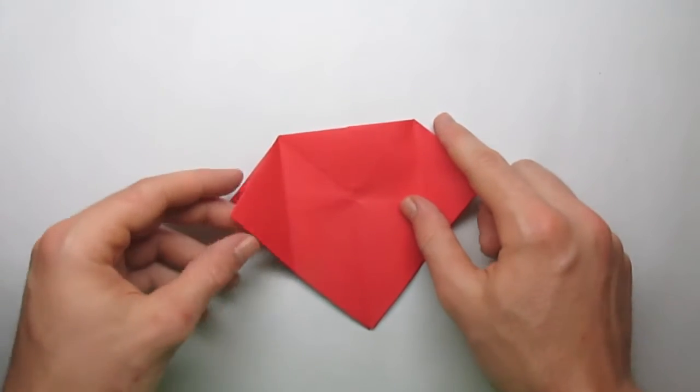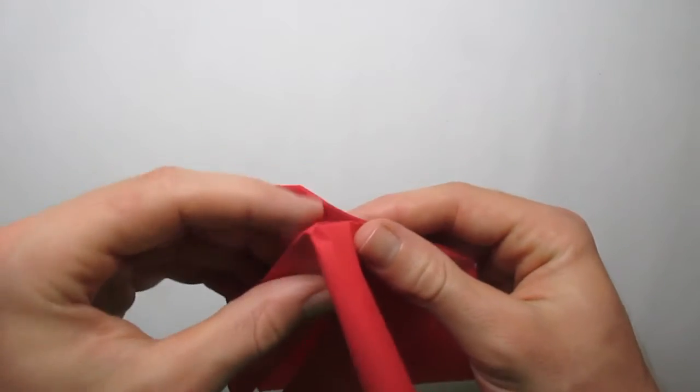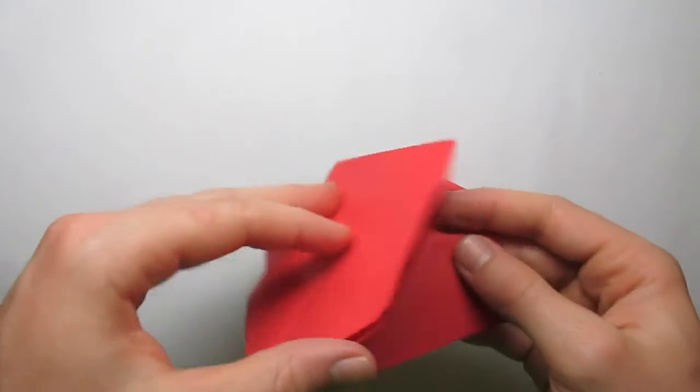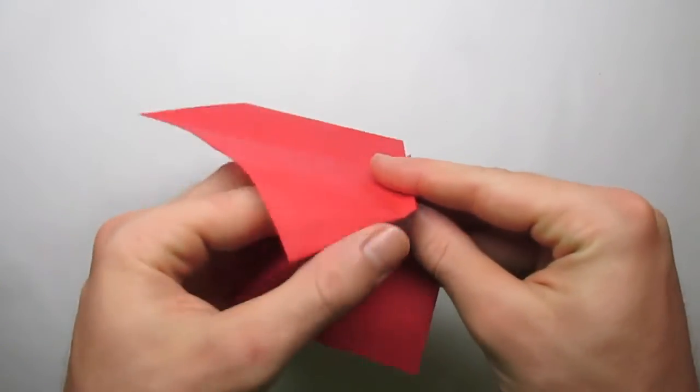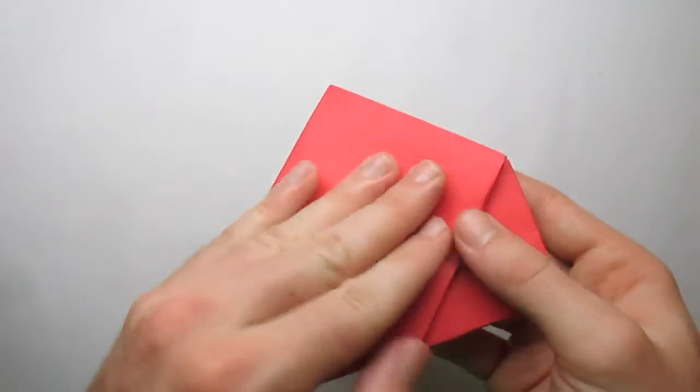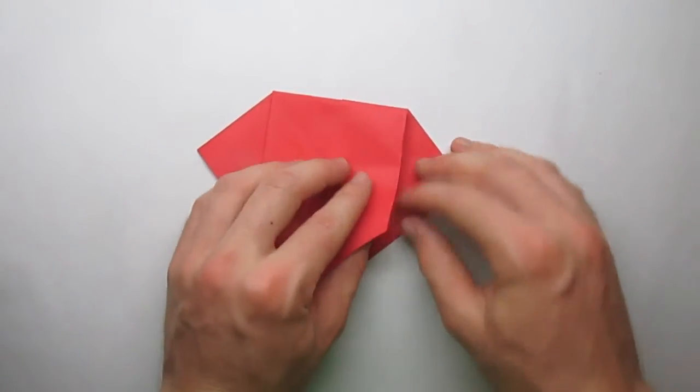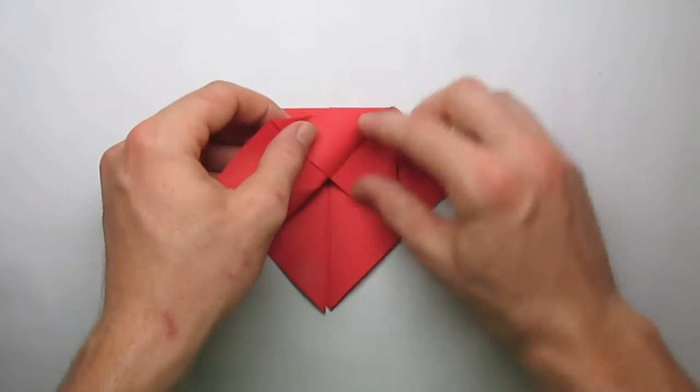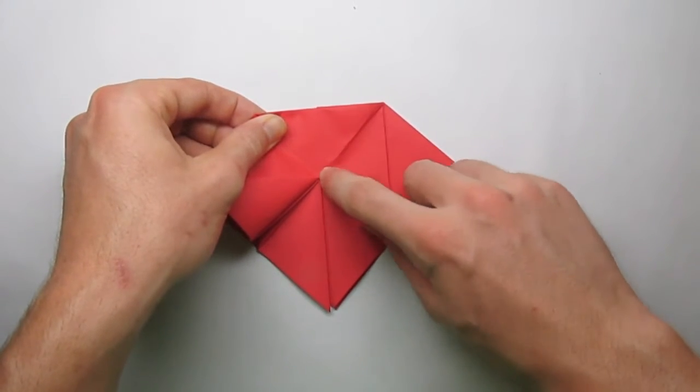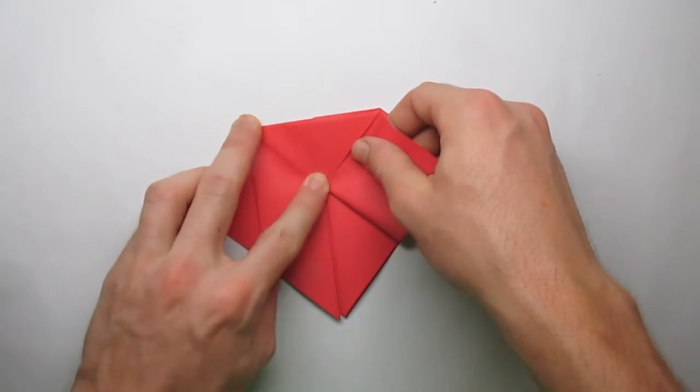Now you're going to reverse these folds. Okay, now you're going to take this paper here and you're going to fold it up, and you're going to crease it right along here, just to the center part. Undo that and do it again over here. Just like that.